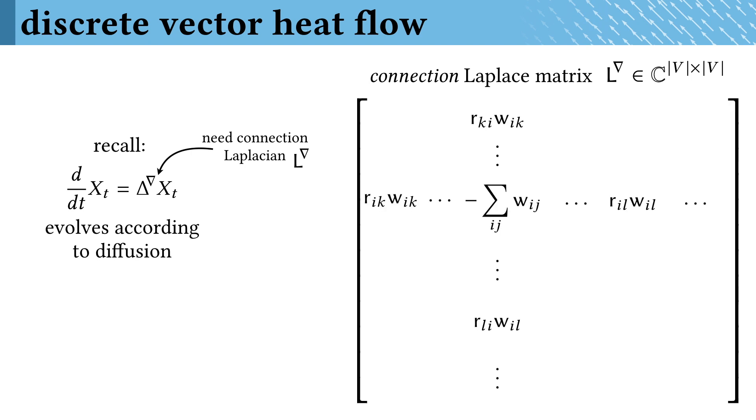Similar to the scalar case, this matrix has off-diagonal elements which are the same weights as before between adjacent nodes, except that here we also need to incorporate the change of basis, or connection, r_ij. The diagonal elements are still just a sum of weights. That's all it takes to make a connection Laplacian.